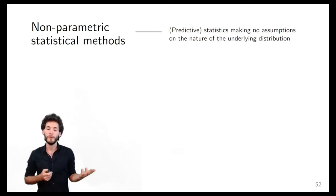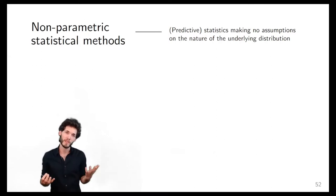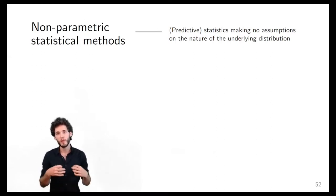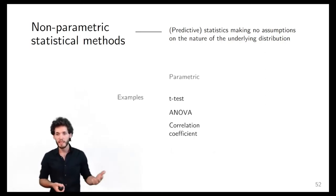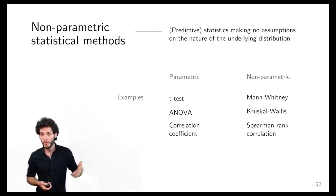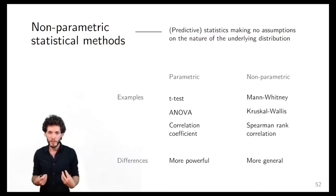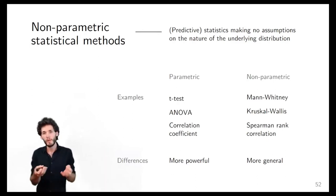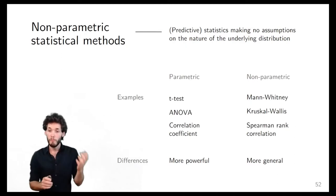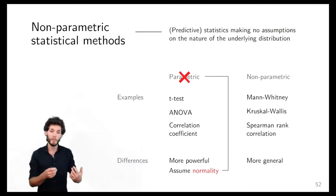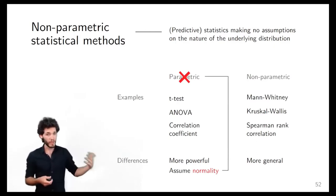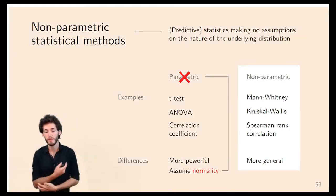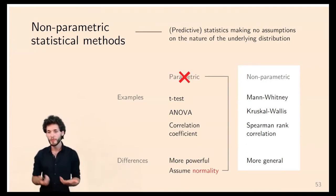Non-parametric statistical methods refer to a class of approaches that do not make any assumptions about the nature of the distribution being analyzed — we do not assume it is normally distributed, for example. If you've taken a statistics class you may know common method names, and most have non-parametric equivalents. The key difference is that parametric tests tend to be more powerful — with the same number of samples they make more accurate predictions — but only if the data actually fulfills the normality assumption. Since that assumption is invalid in 99% of cases, we need to rely on non-parametric methods.